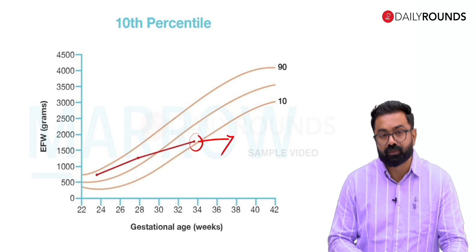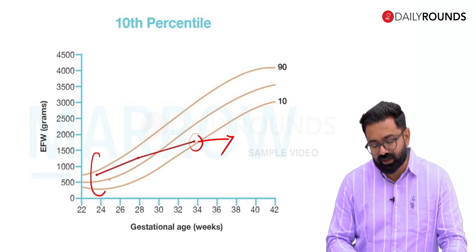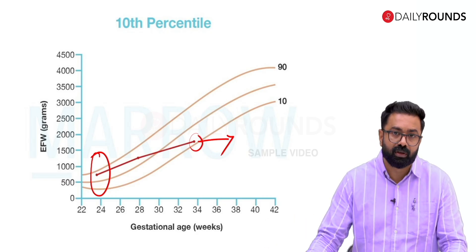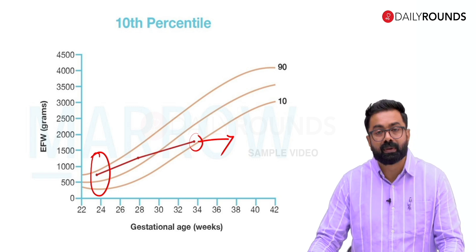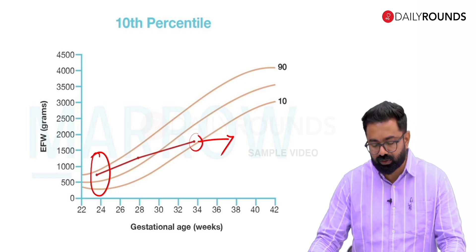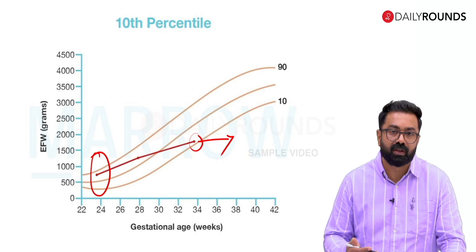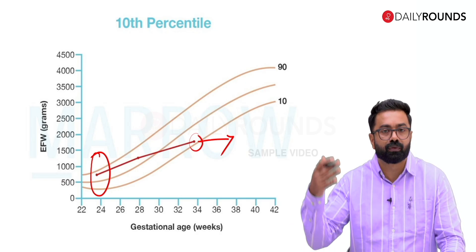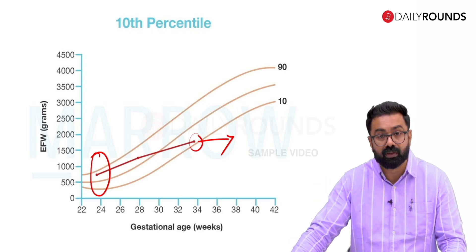The moment you plot the growth chart from previous scans, this tells you there is a falling trend from the 80th centile to the 15th centile — a drop of around 65 centiles, which is more than 2 quartiles. Therefore, this baby should be screened for other signs of growth restriction, and you would switch on Dopplers to look at umbilical arteries, MCA, CPR, and uterines to see if it fits any of the criteria for growth restriction.